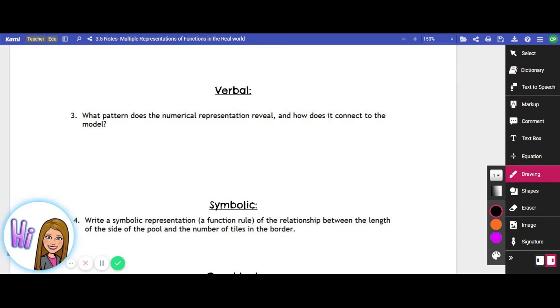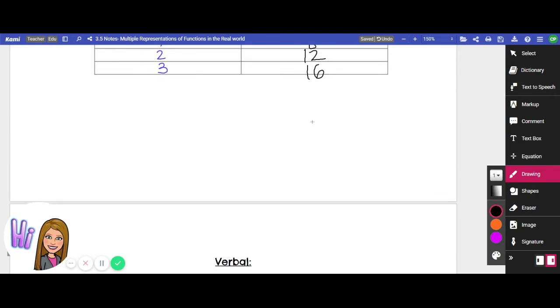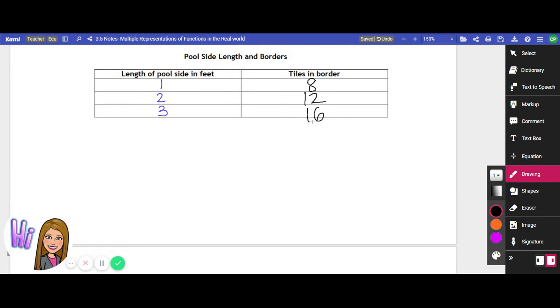On to number three we go. So our next question explains that it's a verbal way of representing this function, but it says what pattern does the numerical representation reveal and how does it connect to the model? This is the part I was kind of talking about earlier where we've got to look for a pattern.